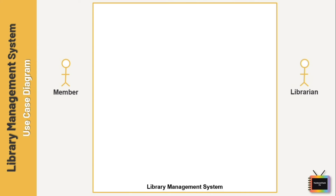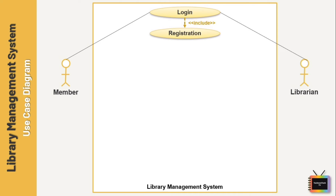Here I am adding the use case 'login'. If a member wants to log in, they should first register themselves in the system. The librarian also needs to register because they will be the one issuing books. I am adding an include relationship from login to registration.